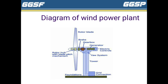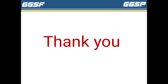The above figure shows the diagram of a wind power plant. There are 10 parts of a wind power plant: first, foundation; second, grid connection; third, tower; fourth, yaw system; fifth, electric controls; sixth, generator; seventh, gearbox; eighth, brake; ninth, rotor blade; tenth, rotor hub with blade. Thank you so much for watching.